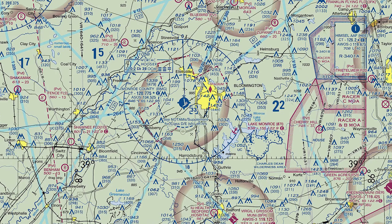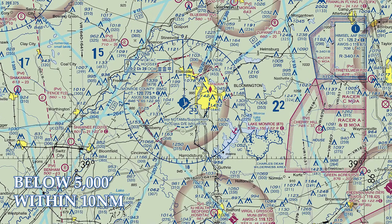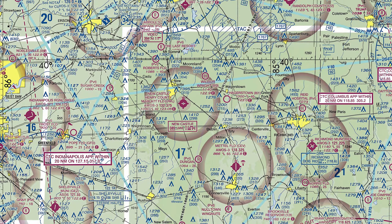Class Delta airspace is different, but not by much. With Class Delta, the only difference is when you are arriving at a Class Delta airport — you should remain on UNICOM until you're below 5,000 feet and within 10 nautical miles of the airport.